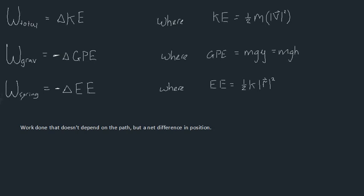That's what we call work done by conservative forces, which I'll call W_conservative. Examples of conservative work include the work done by gravity and the work done by the spring, because they're both dependent on displacement, and if you go back to the original position even after some funky path, there will still be no net work done.